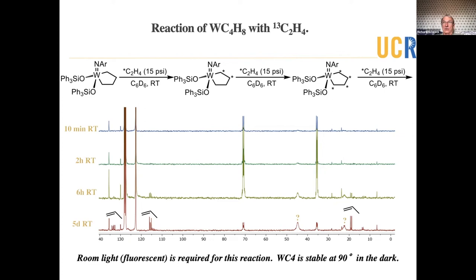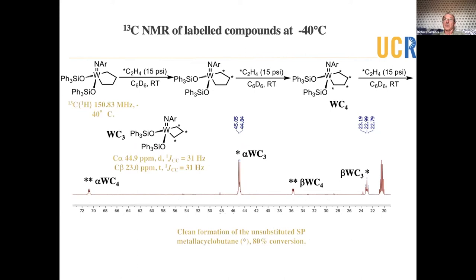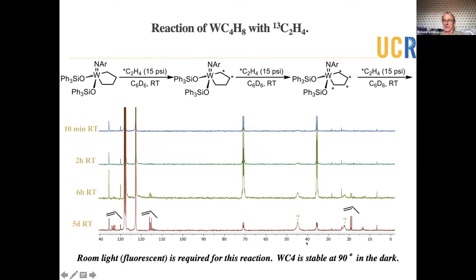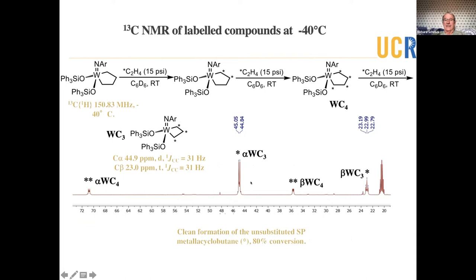This reaction, it requires light. So in the dark, the metallicyclopentane is stable at 90 degrees for three days. And this is room light, fluorescent light. If you take this spectrum and you cool it down, that's typically what you do. If you see some broad peaks, you want to see if there's a fluxional process going on. And indeed, there is.